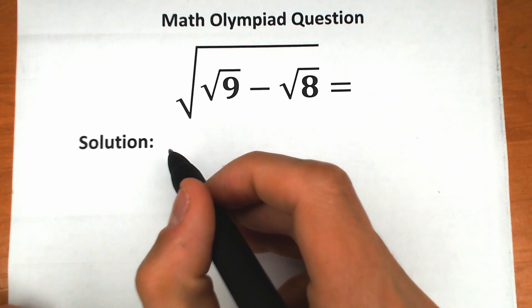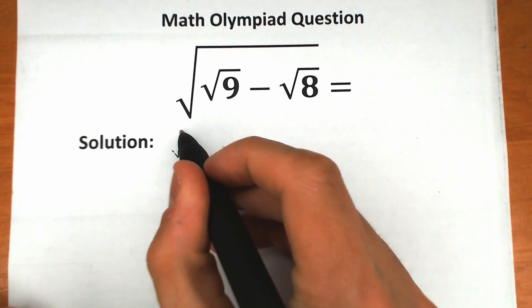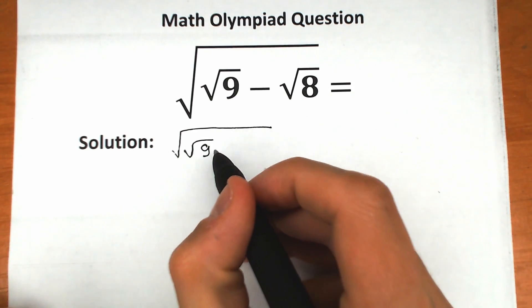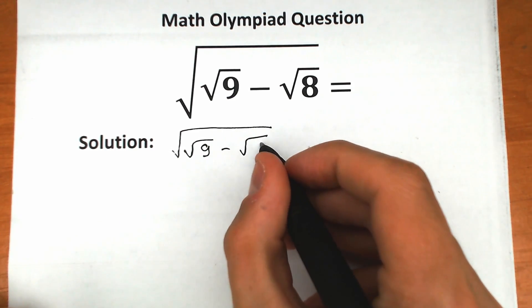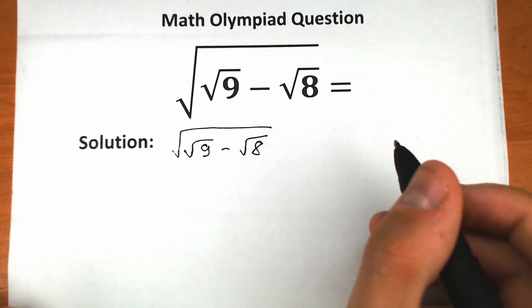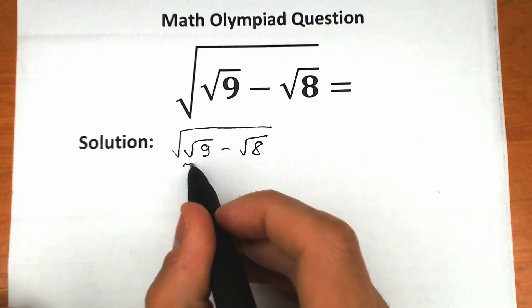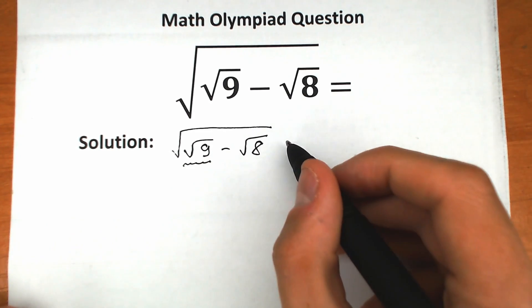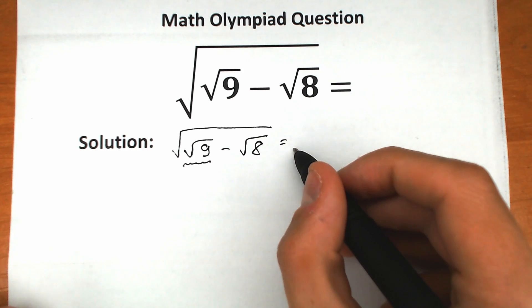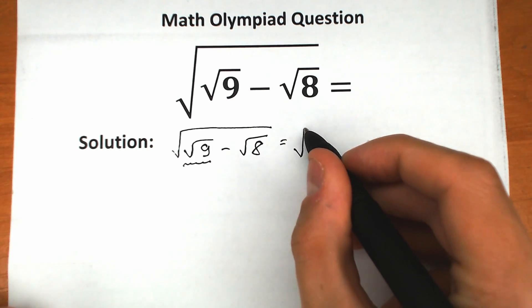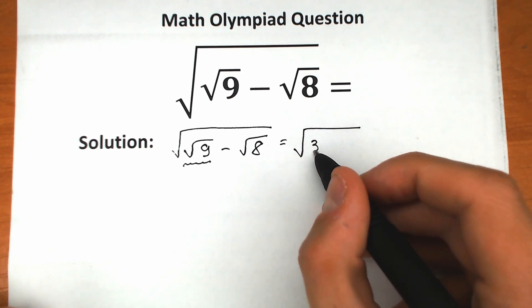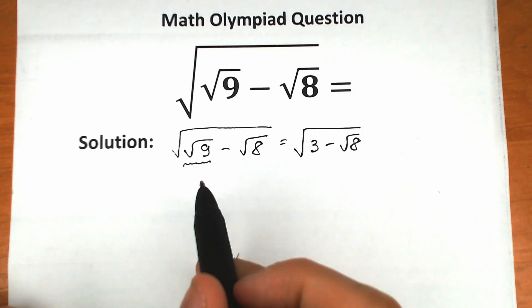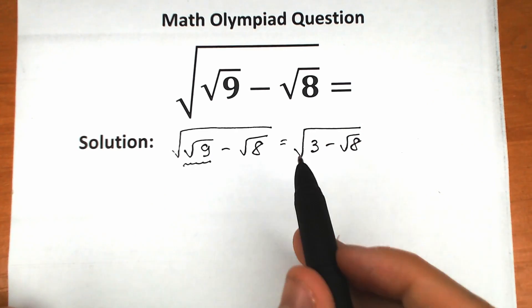First of all, let's rewrite our challenge. We have square root of 9 minus square root of 8. Square root of 9 is equal to 3, so let's write square root of 9 as 3. So we have 3 minus square root of 8.